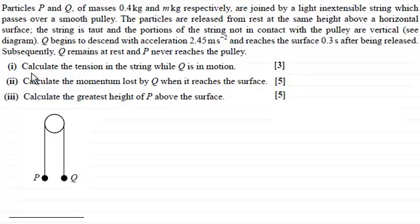Now we've got three parts to this question. In the first part we've got to calculate the tension in the string while Q is in motion, then calculate the momentum lost by Q when it reaches the surface, and then in part three calculate the greatest height of P above the surface.